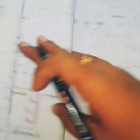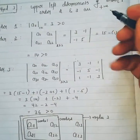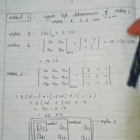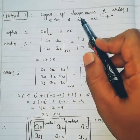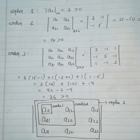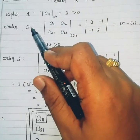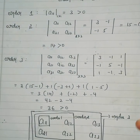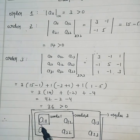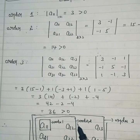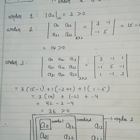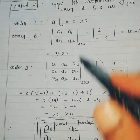Method three — I think this one is going to be easier in the exam. What method three says is: the upper left determinants of order 1, order 2, and order 3 must all be positive. Order 1 is a 1×1 matrix, order 2 is a 2×2 matrix, and order 3 is a 3×3 matrix. For a given 3×3 matrix, order 1 means the first row, first column entry; order 2 means the top-left 2×2 submatrix; and order 3 means the whole matrix.